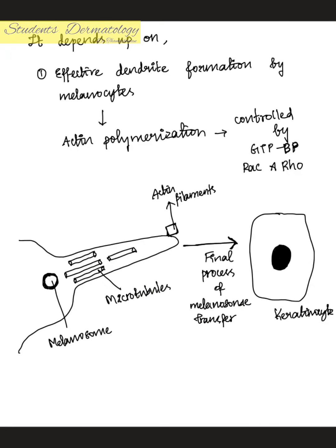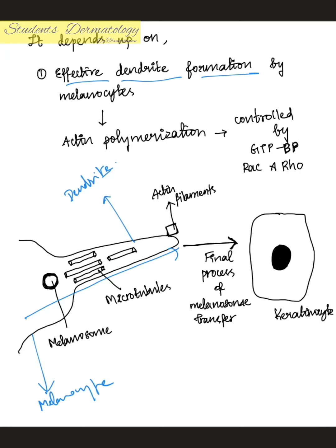As shown in the diagram, this is the melanocyte and this is its dendrite. Melanosome transfer always occurs from the center of the cell to the periphery. For effective dendrite formation by melanocytes, actin polymerization must take place, which is in turn controlled by GTP-binding proteins RAC and RHO.